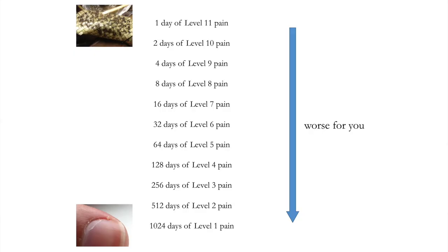16 days of level 7 pain. 32 days of level 6 pain. 64 days of level 5 pain. 128 days of level 4 pain. 256 days of level 3 pain. 512 days of level 2 pain. Until we arrive at 1024 days of level 1 pain. And we've been continually getting worse.